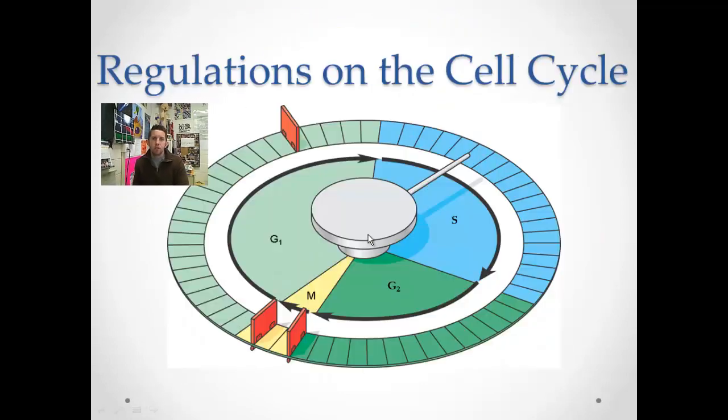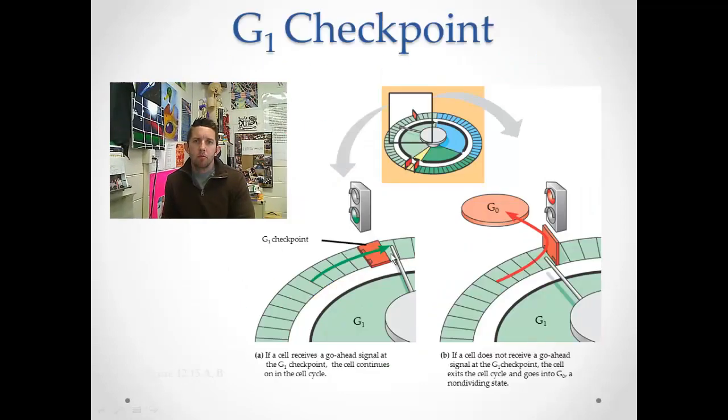The first, the G1 checkpoint, once again, right here. If a cell is good to go, if it's prepared, if it has the sensors that it needs, it's going to move through G1. And typically, if a cell moves through G1, it's going to go ahead and progress through the cell cycle. The G1 checkpoint is a very crucial one. We talked in the last screencast about the G0 state and how many cells kind of hover in the G0 state, waiting for some kind of signal to kick back into G1.